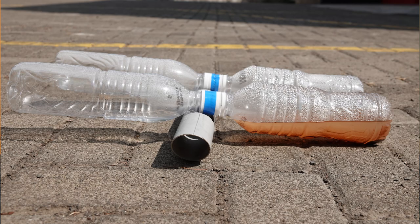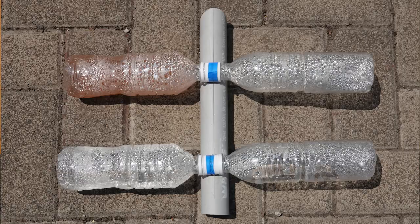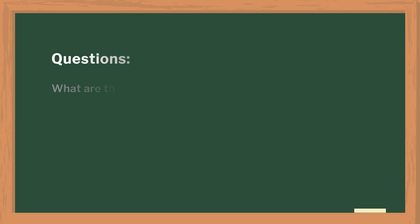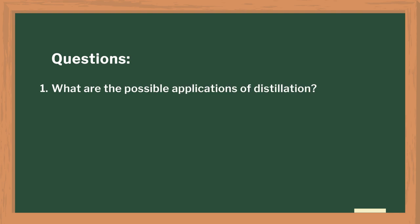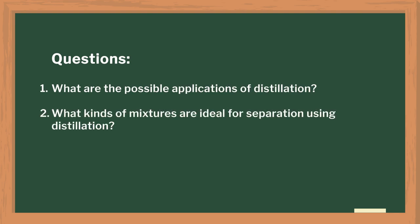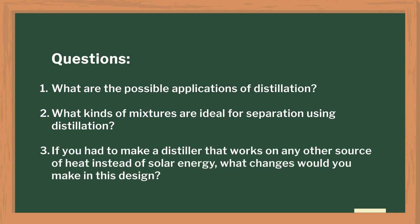We then demonstrated the method of distillation to purify water. You can make a simple solar distiller using plastic bottles. We discussed the working principle of the distiller and prompted the following questions for effective discussion: What are the possible applications of distillation? What kind of mixtures are ideal for separation using distillation? If you had to make a distiller that works on any other source of heat instead of solar energy, what changes would you make in this design?